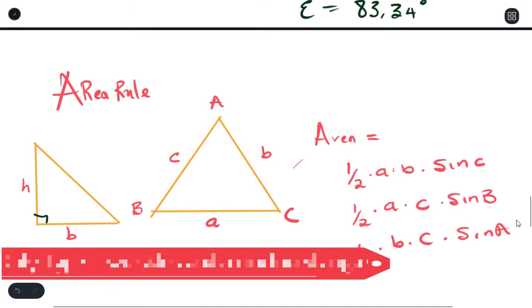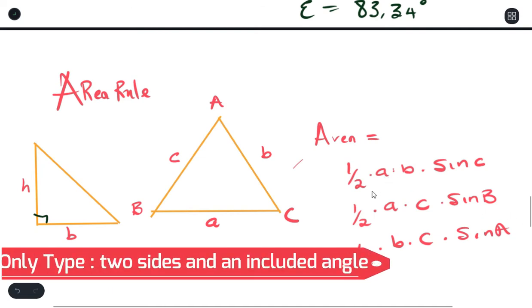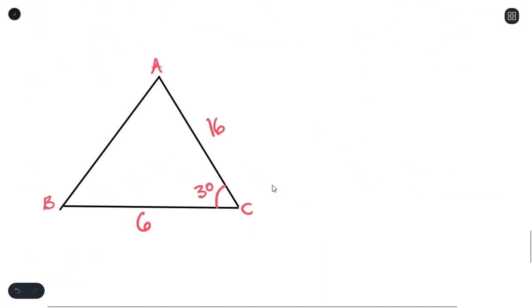Yeah, so this will be your area. Two sides and an angle in between them. Now if you have an example like this and they ask you to find what the area of this, we're just going to say it is half times 6 times 16 sine of 30. And that will give you 24. But since it is area and we don't have a unit, we can just say it is unit squared. And that's it.